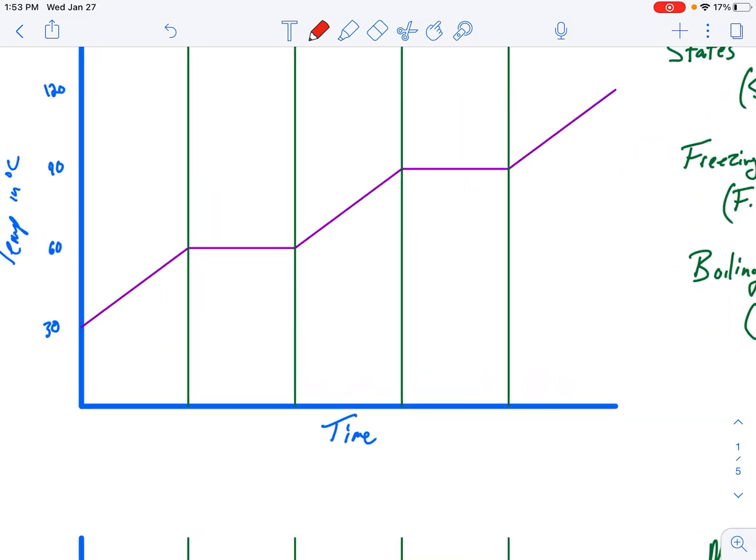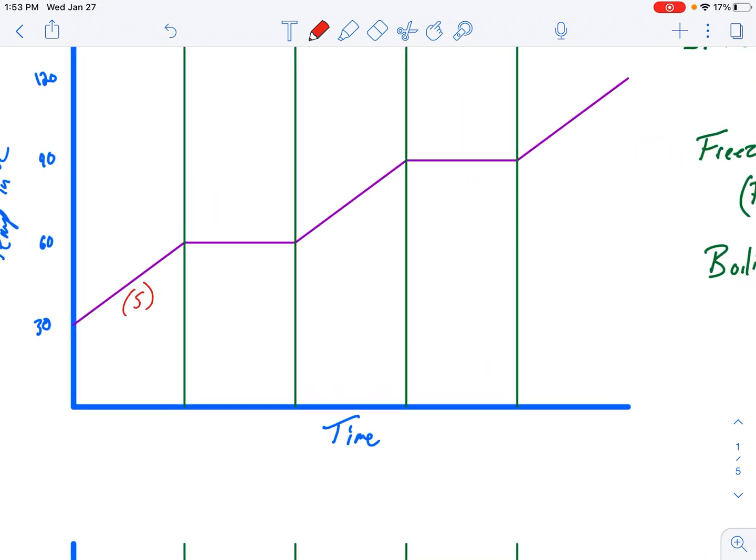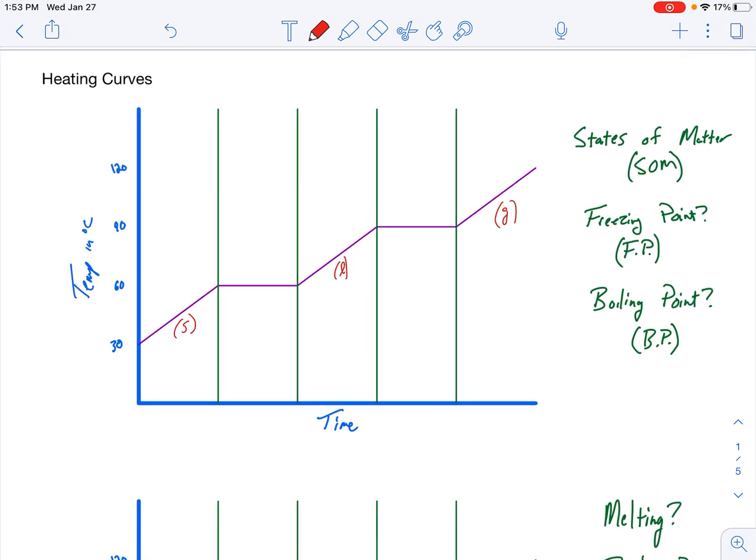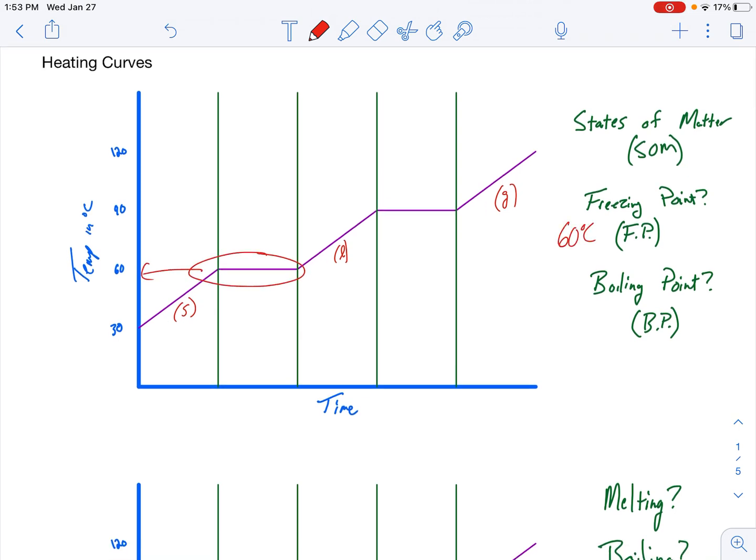So states of matter. In any heating curve, you're going to start with a solid, change to a liquid, and eventually to a gas. That's how it works. Where's the freezing point? Your freezing point is at the first horizontal. So in this case, it's about 60 degrees Celsius. Where's the boiling point? Your boiling point's at the second horizontal, or about 90 degrees Celsius.